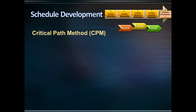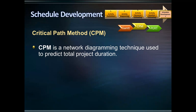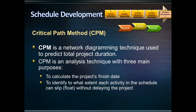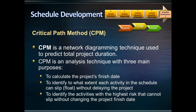A method that predicts a project's total duration is the Critical Path Method, or CPM. CPM is an analysis technique with three main purposes: to calculate the project's finish date; to identify to what extent each activity in the schedule can slip without delaying the project; and to identify the activities with the highest risk that cannot slip without changing the project finish date.